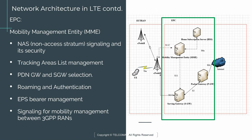The first network element we're going to talk about is called the Mobility Management Entity, also known as the MME. As you can see here, we have the same picture from the previous section. I've highlighted the EPC portion and the MME is located right here. The MME is connected to the eNodeBs, and also connected to the Home Subscription Server (HSS) and to the Serving Gateway (SGW).